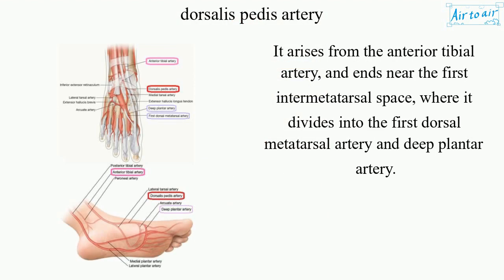It arises from the anterior tibial artery and ends near the first intermetatarsal space, where it divides into the first dorsal metatarsal artery and deep plantar artery.